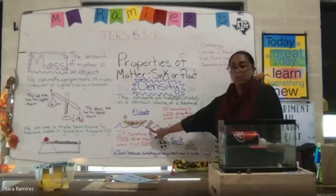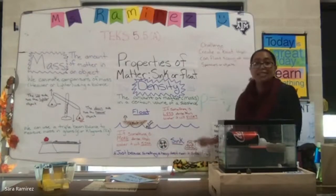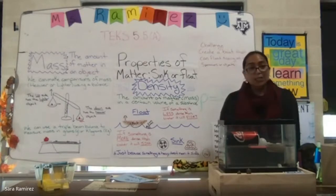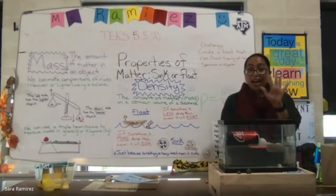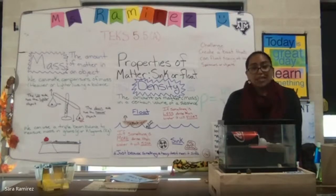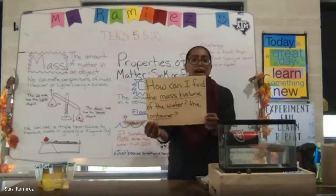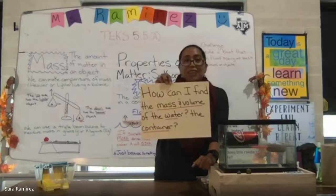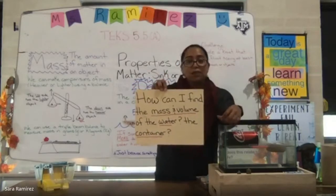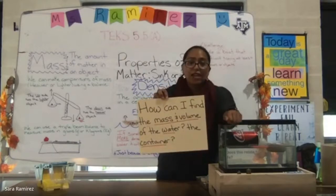We also learned that density is the amount of matter or mass in a certain volume of a substance, and the mathematical way to calculate density is mass divided by its volume. The boat and the bottle are floating, so they are less dense than the water. The tire and the rock sink, so they are more dense than the water. For an at-home challenge, I want you to create some sort of boat with whatever materials you have at home — see if it can carry at least five pennies and float in a tub of water. Also, think about how you could find the mass and volume of water inside a container and of the container itself.